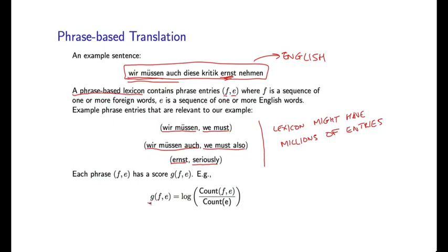I'll use G of F,e to refer to the score for any lexical entry. Each of these has a score, for example minus 1.5, minus 1.8, or minus 0.2. This might be the log of a ratio of counts, similar to a maximum likelihood estimate. This can be thought of as T of F given E, the conditional probability of the foreign sequence conditioned on the English sequence, the ratio of these counts. As we saw in the last lecture, it's convenient to take logs, and then we'll start summing these different scores for different phrases used in a translation.